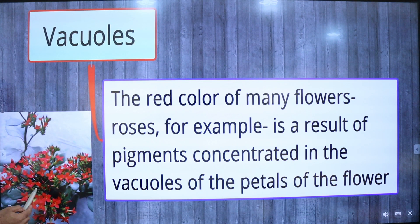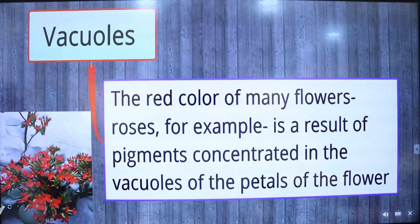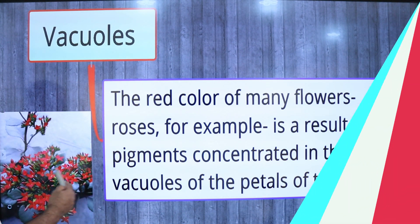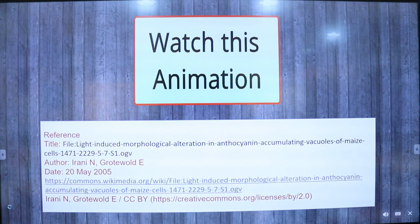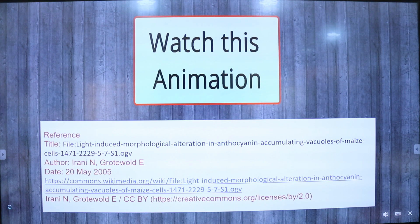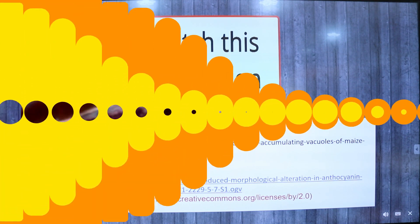The red color of many flowers such as roses is a result of pigments concentrated in vacuoles of the petals. Let us watch this animation to examine the accumulation of anthocyanin — that is, red and blue pigments — in the vacuoles.